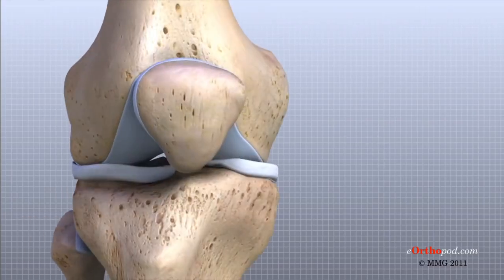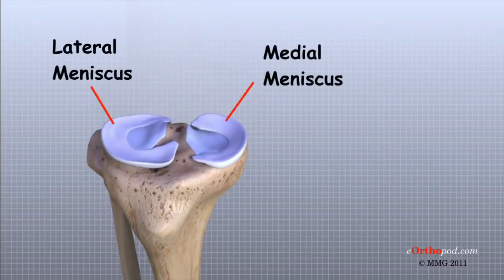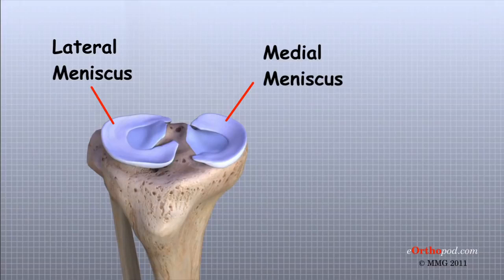Two special types of ligaments, called menisci, sit between the femur and the tibia. These structures are sometimes referred to as the cartilages of the knee. But the menisci differ from the articular cartilage that covers the surface of the joint. The two menisci of the knee are important for two reasons. One, they work like a gasket to spread the force from the weight of the body over a larger area. And two, they help the ligaments with stability of the knee.